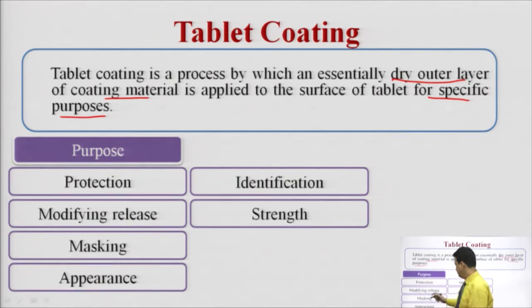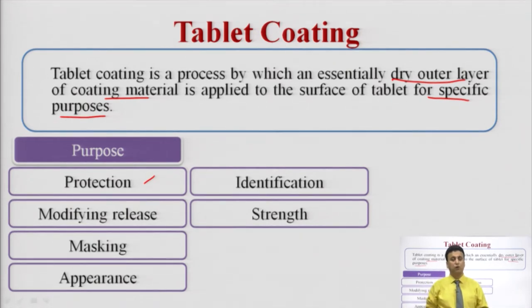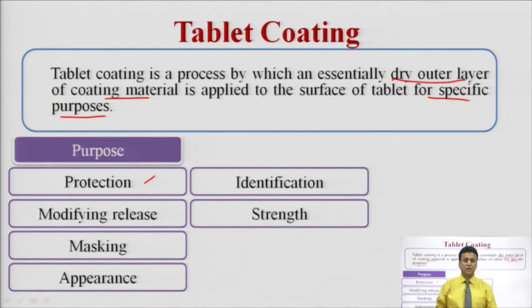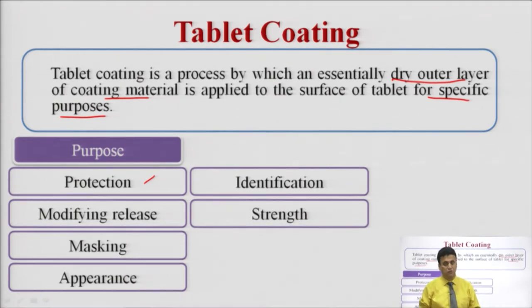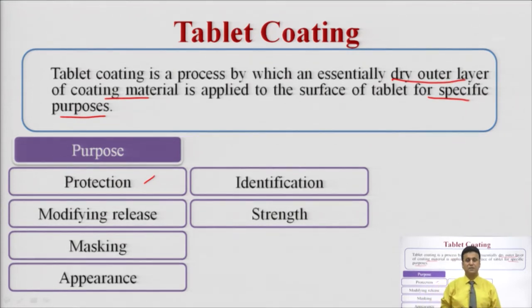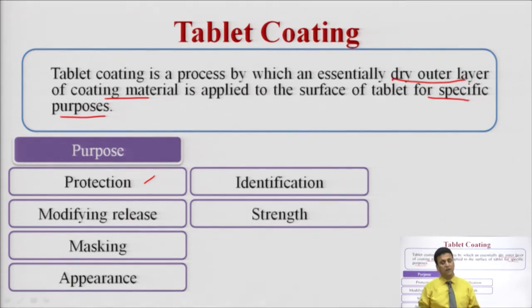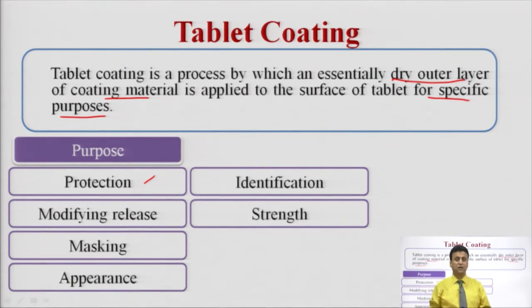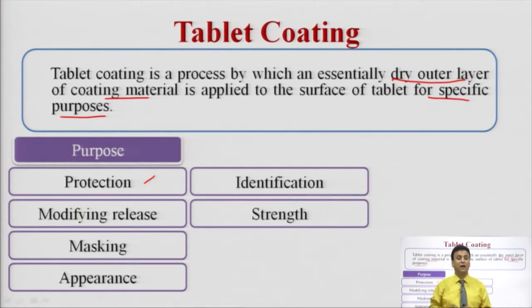The first purpose is protection — protection of the tablet. We can protect the tablet from the environment like moisture, oxygen, and heat. Agar humari drug moisture se ya oxygen se degrade ho sakti hai, toh usse protect karne ke liye we have to apply a coating on the tablet surface.